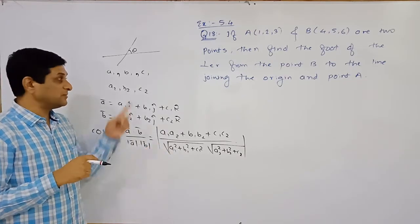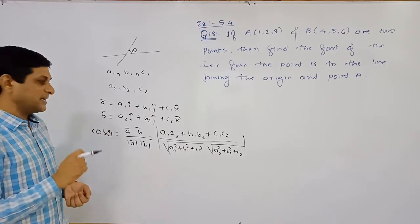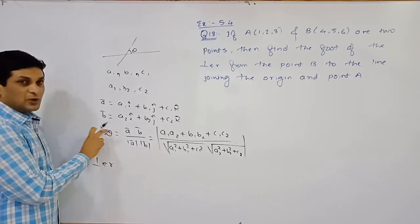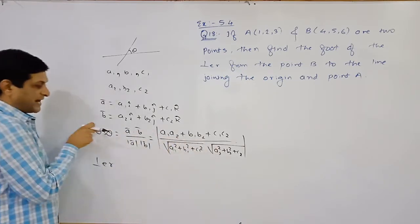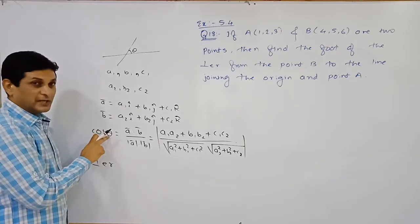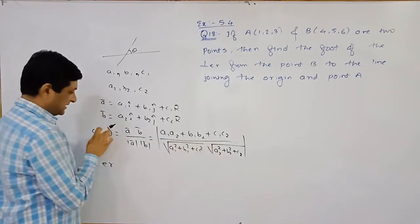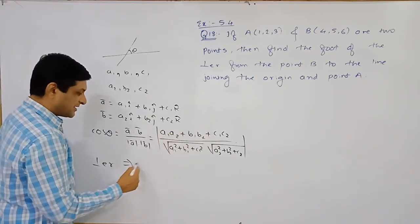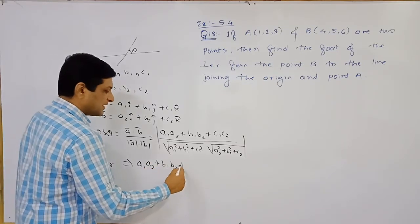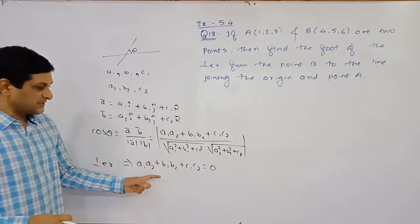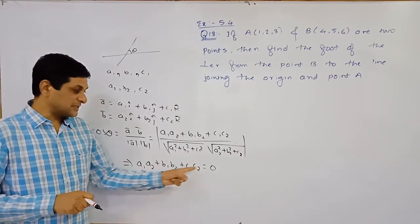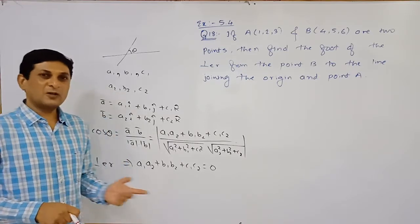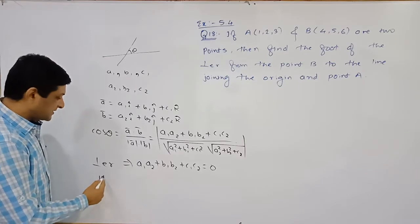This is the formula to find the angle between two lines when direction ratios are given. If the lines are perpendicular, θ = 90° and cos 90° = 0, so the numerator must be zero. This gives us the condition: a1·a2 + b1·b2 + c1·c2 = 0, which is satisfied when the lines — or vectors — are perpendicular.